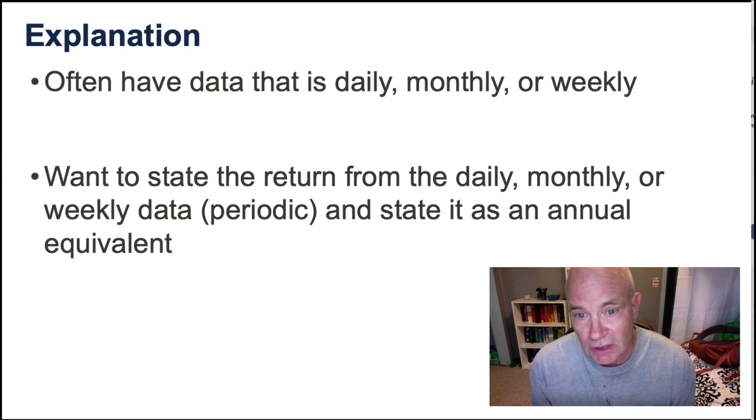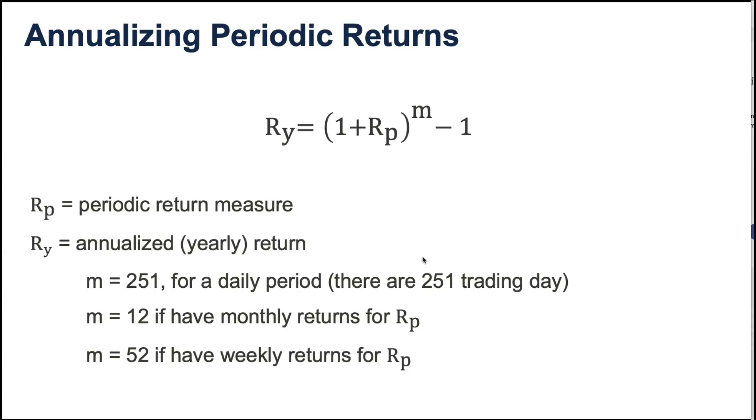What we often want to do is state that daily mean, monthly, or weekly data, or that periodic data, and state it in its annual equivalent. If you look at any prospectus or any reporting on financial data, the returns and standard deviations are stated on an annual or yearly equivalent almost always, 99.99% of the cases. So we're going to describe how you take data that is daily, monthly, weekly, or whatever it is, and state it in its annual equivalent. There are two formulas to do that.